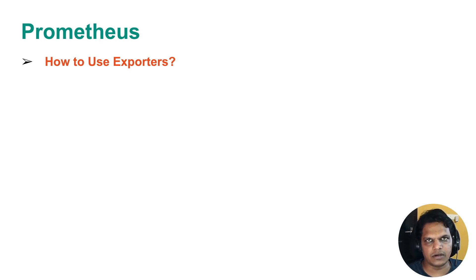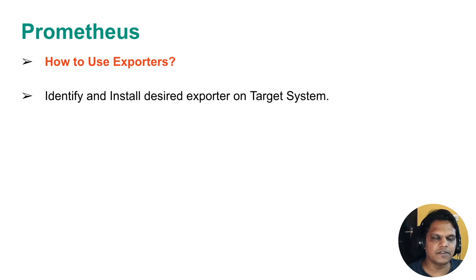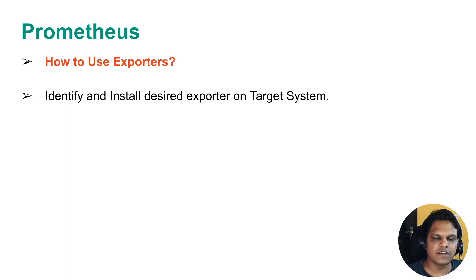Now let's see how to use an exporter. The very first step is to identify and install the desired exporter on the target machine. Whatever software or service is running on that machine — for example, a Linux machine running MongoDB or MySQL — you need to identify the right exporter for it and install it. If you want both system-level and MySQL service data, you need to install two exporters: the Node Exporter and the MySQL Exporter.